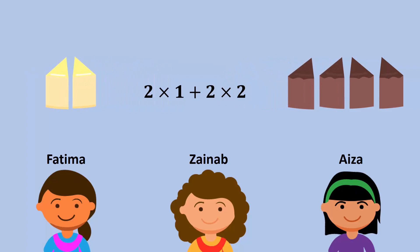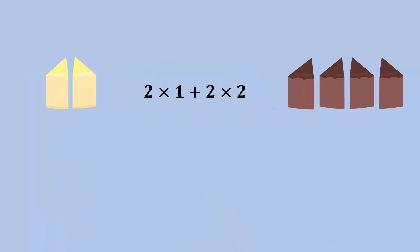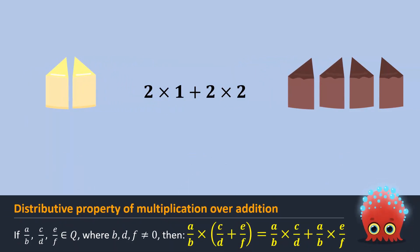In mathematics, this kind of distribution is referred to as the distributive property of multiplication over addition. For any three rational numbers A over B, C over D, and E over F, where B, D, and F are not equal to zero, the following expressions are equal. This is called the distributive property of multiplication over addition for rational numbers.